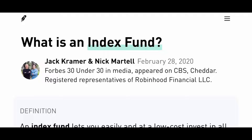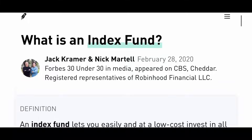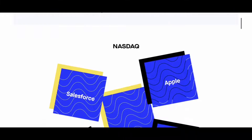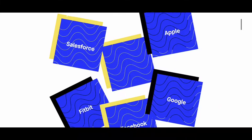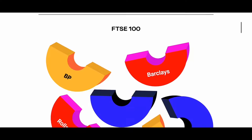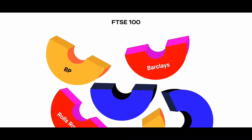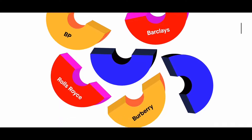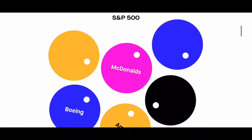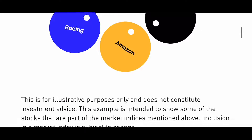This article is from Jack Kramer and Nick Martell. Definition: an index fund lets you easily and at a low cost invest in all the stocks that make up an index. There are many different index funds — there's the NASDAQ, which has stocks like Google, Fitbit, and Facebook; the FTSE 100, which has Barclays, BP, Rolls-Royce, and Burberry; and my favorite, the S&P 500, which has stocks like McDonald's, Boeing, and Amazon.